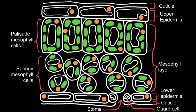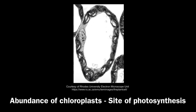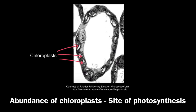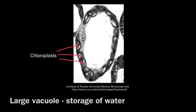Looking in more detail at palisade mesophyll cells in an electron micrograph, the most notable feature is the chloroplasts, found all around the outside of the cell in abundance. This makes sense because chloroplasts are the site of photosynthesis, and palisade mesophyll cells receive a lot of light as they are just beneath the cuticle and upper epidermis.